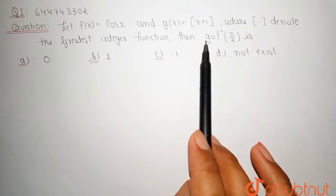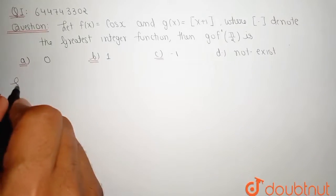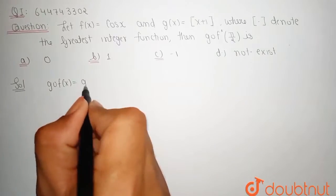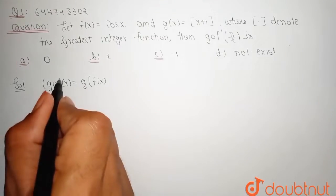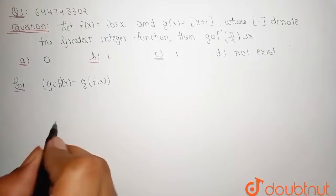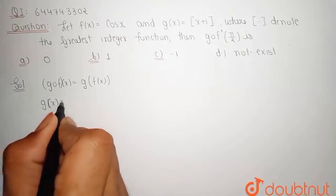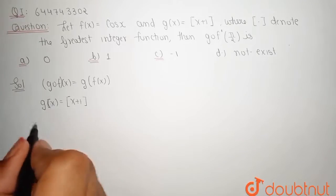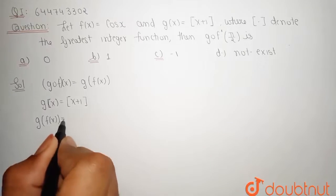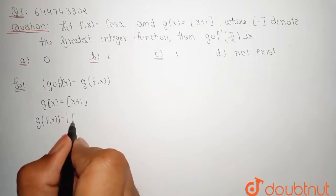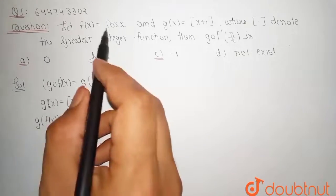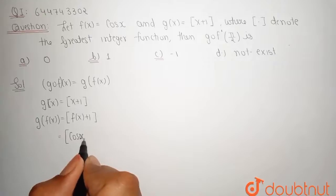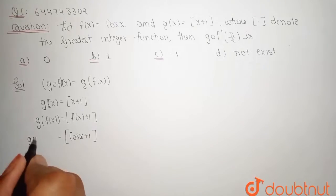Note that gof means composite function. So first we understand what gof(x) is. gof(x) is nothing but g(f(x)). Our g(x) is the greatest integer of x plus 1. Replacing x by f(x), we get the greatest integer of f(x) plus 1. Since f(x) = cos(x), our gof function is the greatest integer of cos(x) plus 1.